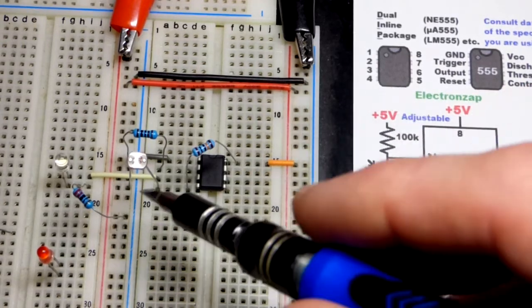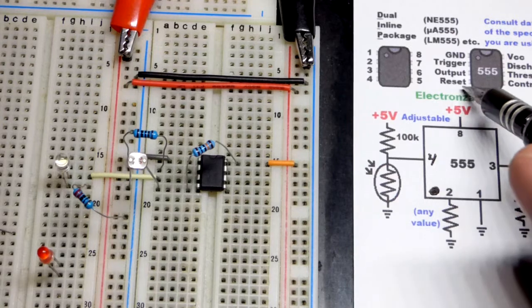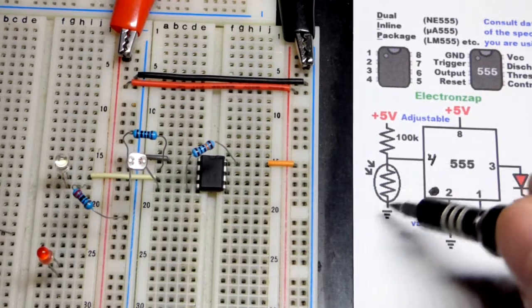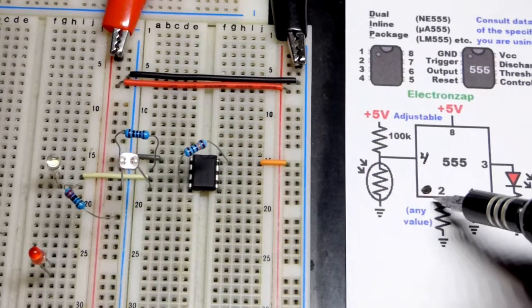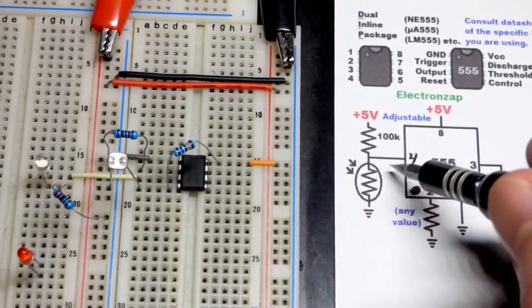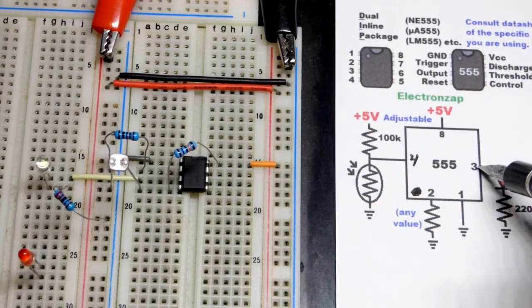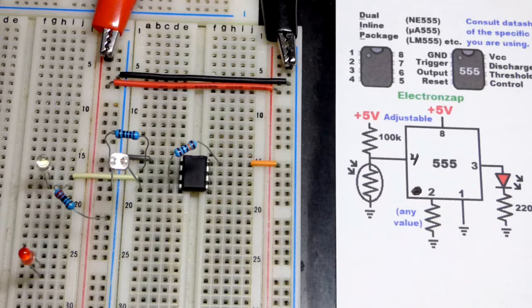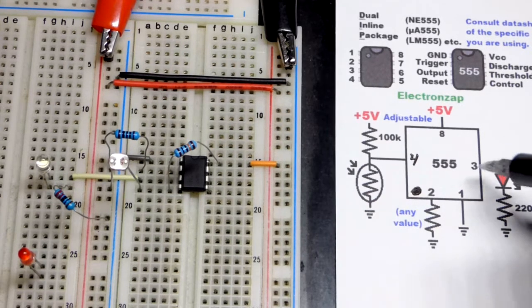So pin four right there, bottom left, is the reset pin. And a reset pin, when it has a low input, the output's low no matter what. So it doesn't matter what pin two wants. Pin four has a low input. The output's low. End of story right there. So hopefully that makes sense. Reset pin overpowers anything else the 555 timer wants to do. So that's the output low.